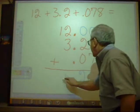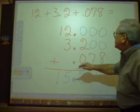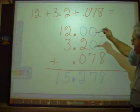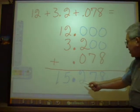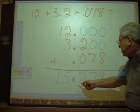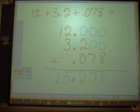Three and two is five. Bring down the one. So twelve plus three point two plus zero point seven eight is fifteen point two seven eight. Fifteen and two hundred seventy-eight thousandths.